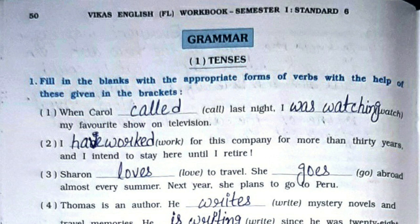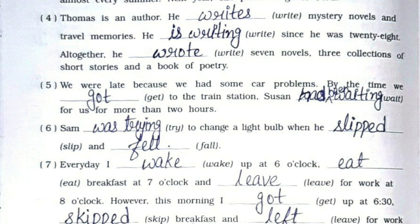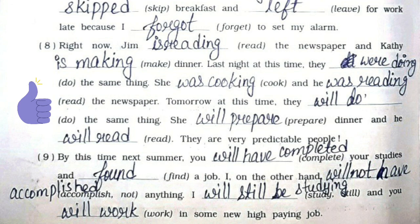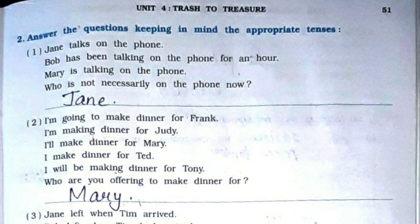First one is fill in the blanks with the appropriate forms of verbs with the help of the hints given in the brackets. First answer: called and was watching. Second: have worked. Third: loves and goes. Fourth: writes, is writing, and wrote. Fifth: got and had been waiting. Sixth: was trying, slipped, and fell. Seventh: wake, eat, eat, leave, leave, go, got, skipped, left, and forgot. Eighth: is reading, is making, were doing, was cooking, was reading, will do, will prepare, and will read. Ninth: will have completed, found, found, will not have accomplished, will still be studying, and will work.